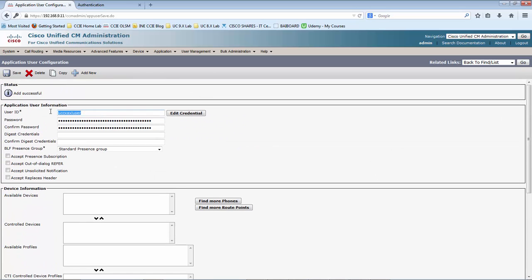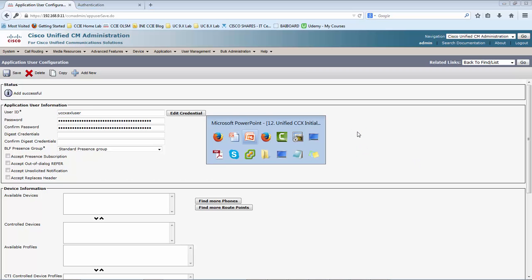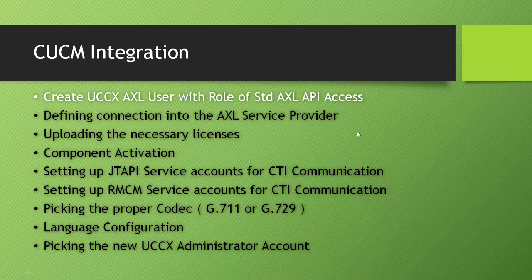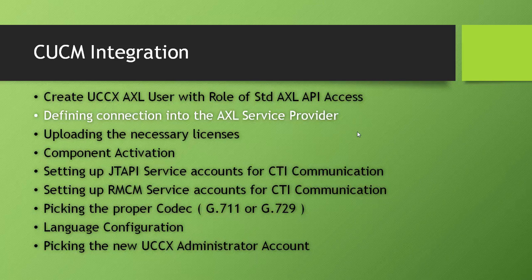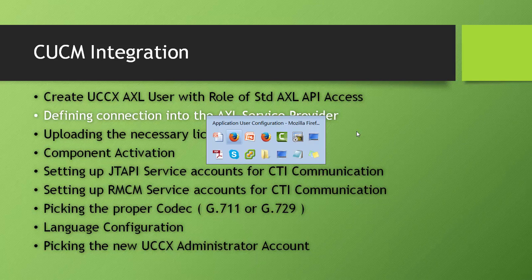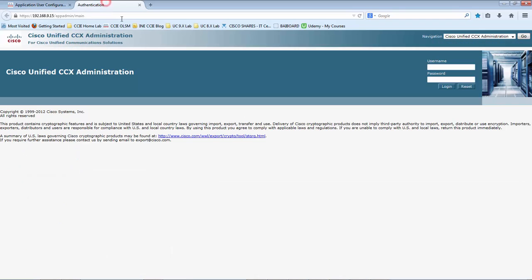Let me copy this username. Next part is defining the connection parameters into the AXL service provider. This step we would be performing in the Unified CCX app administration page. Let me navigate to the Unified CCX administration page.